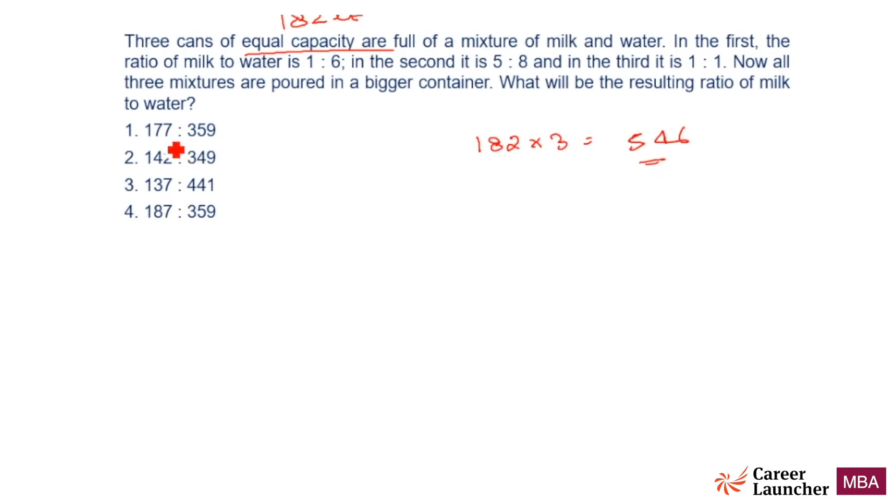Look at the choices. 7 plus this one, what is the sum of these two? 359 plus 177, 359, 459, 460, 536. This is coming out to be 536, wrong choice.